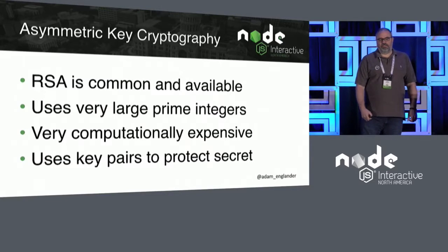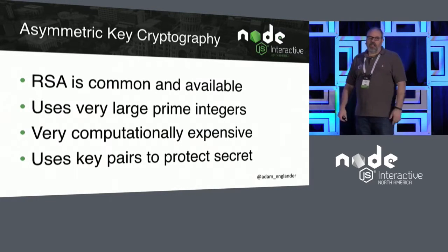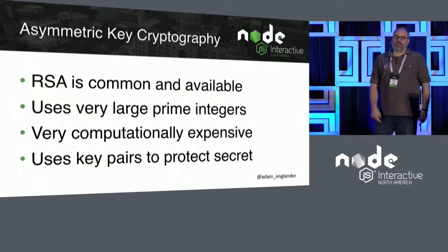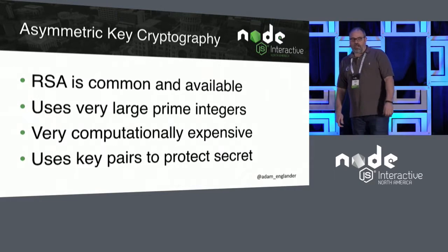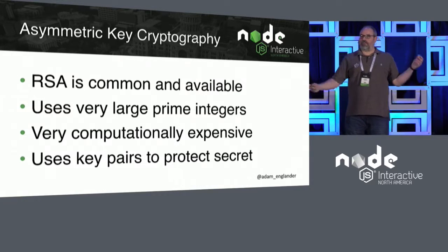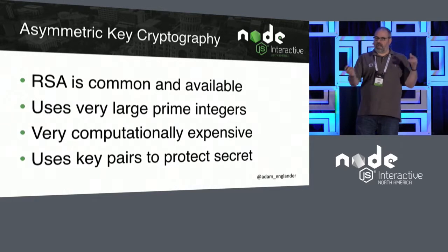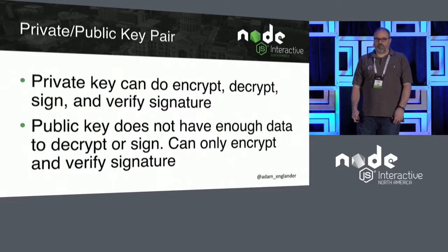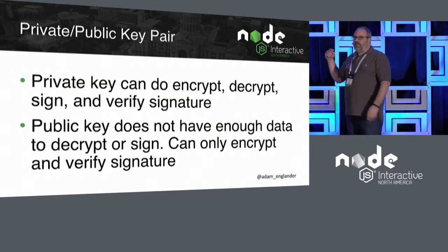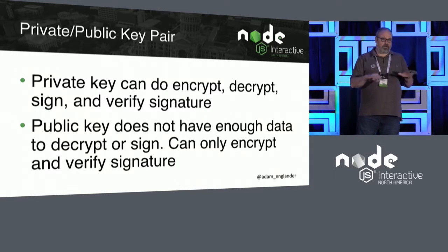Asymmetric key cryptography: RSA is common and available in Node. It uses very large prime integers, it's very computationally expensive, and it uses key pairs to protect secrets. In order to move encrypted data back and forth, I have a set of keys, you have a set of keys. I encrypt it with my set and give it to you, you encrypt it with your set and give it back. You've got a private key and public keys. The private key is secret — you don't give it to anyone, ever.